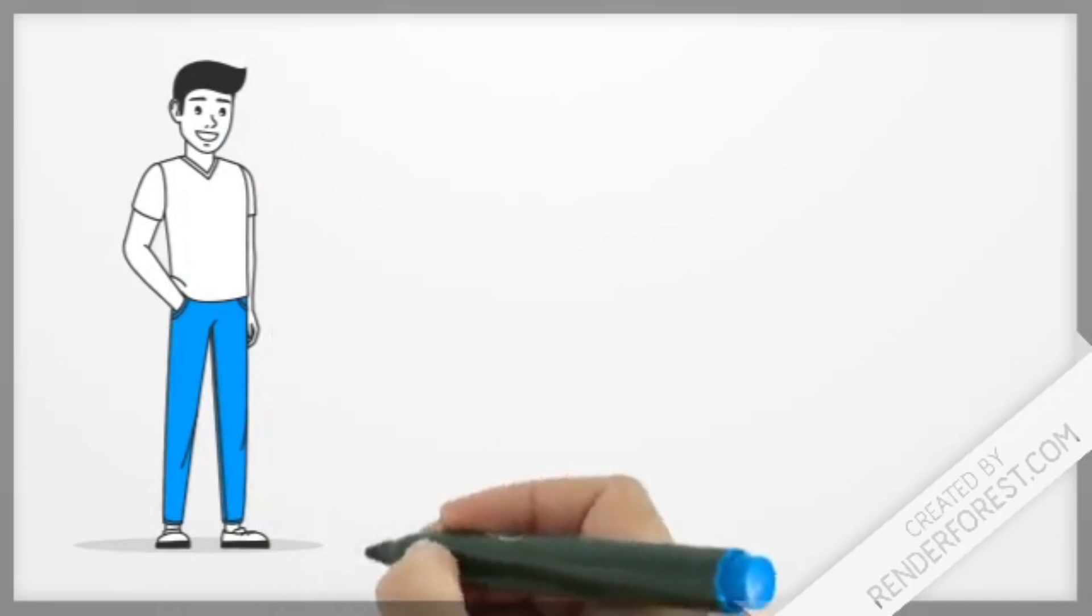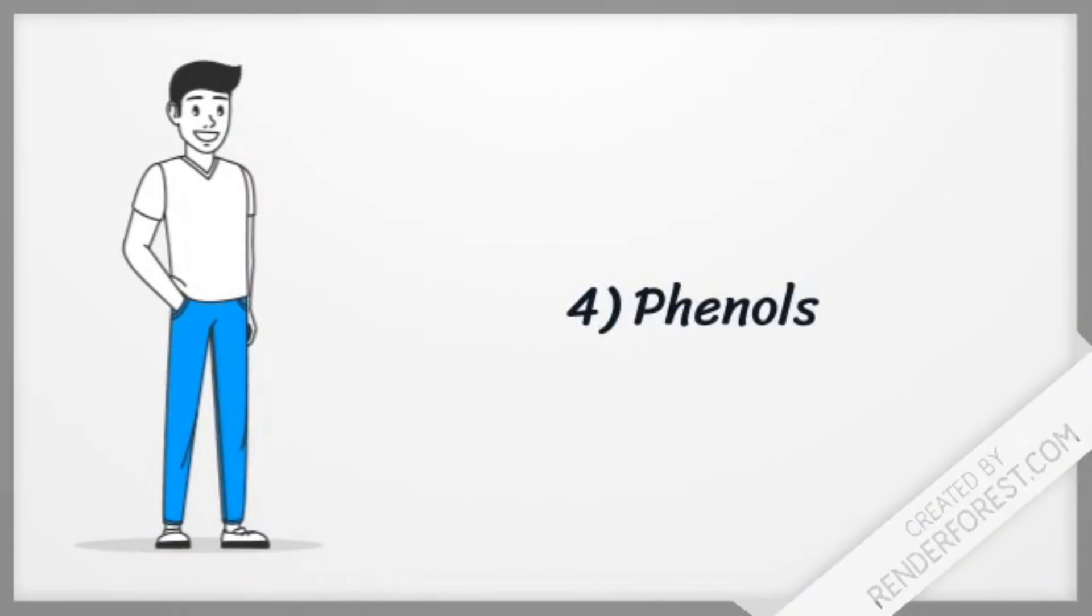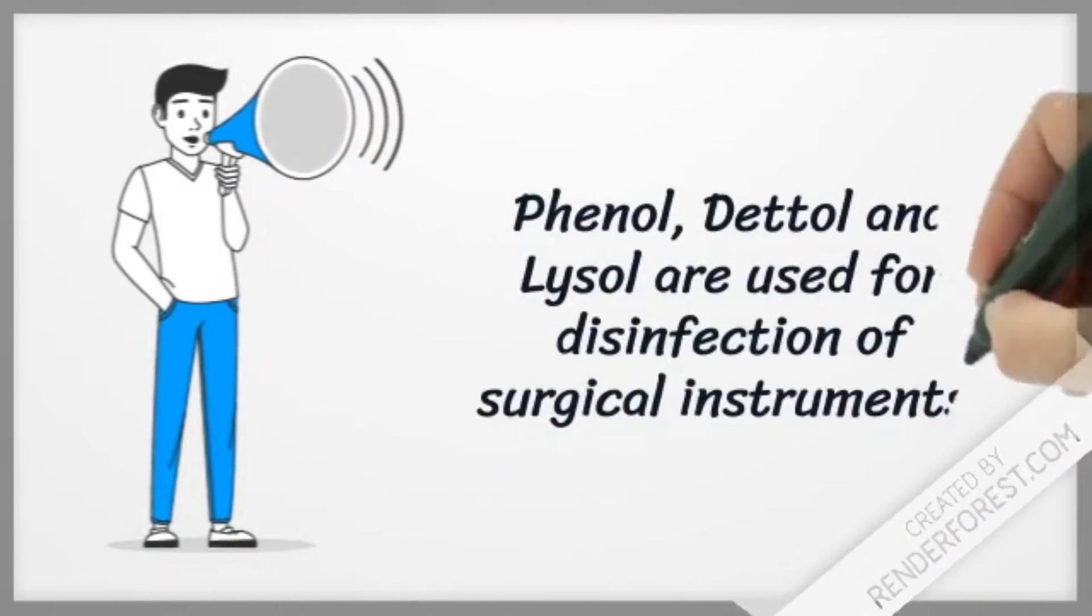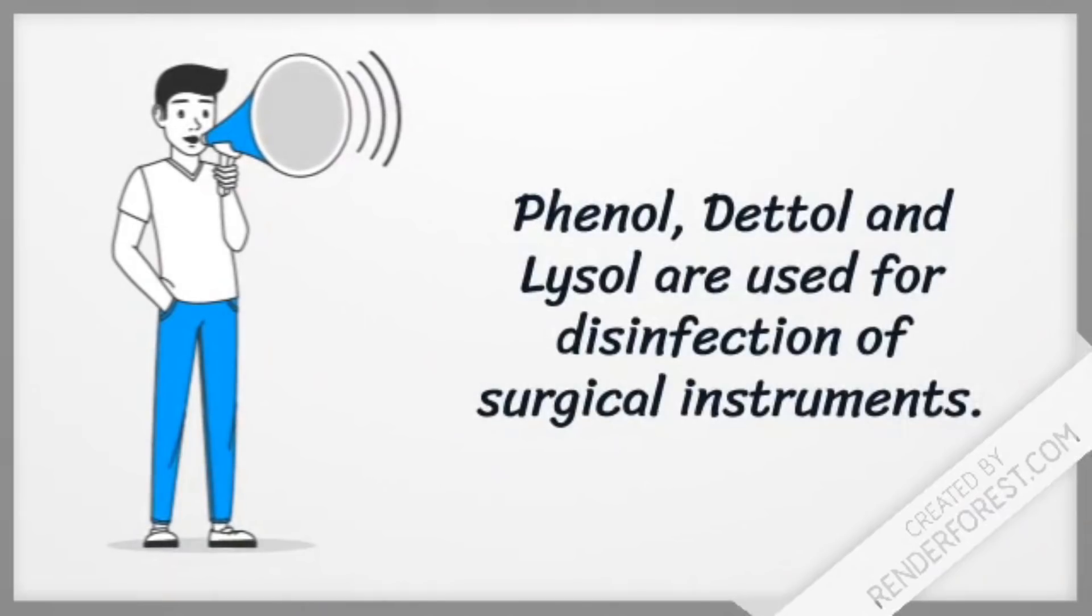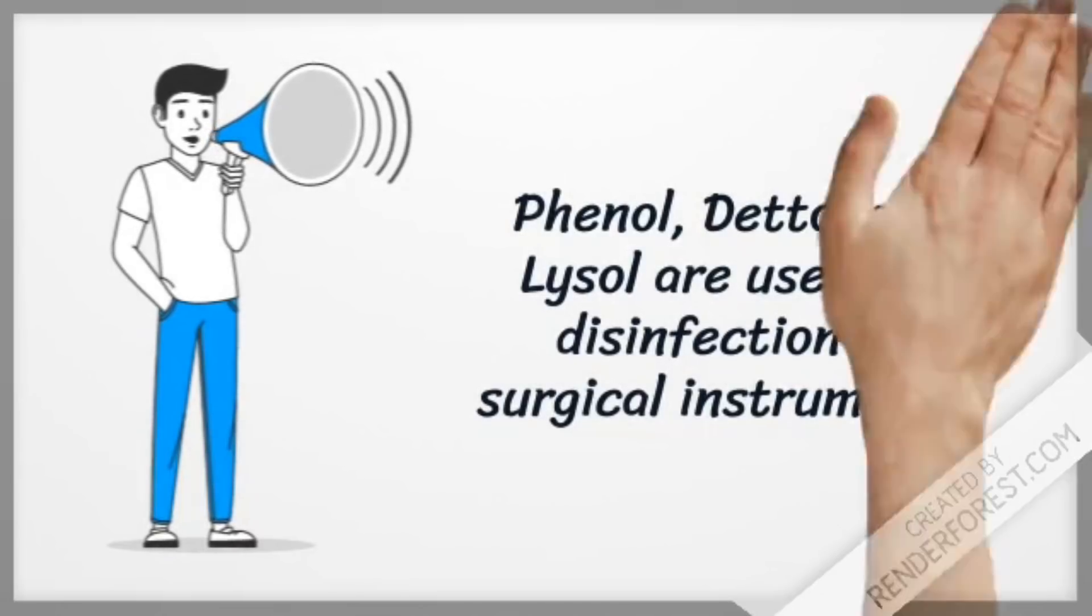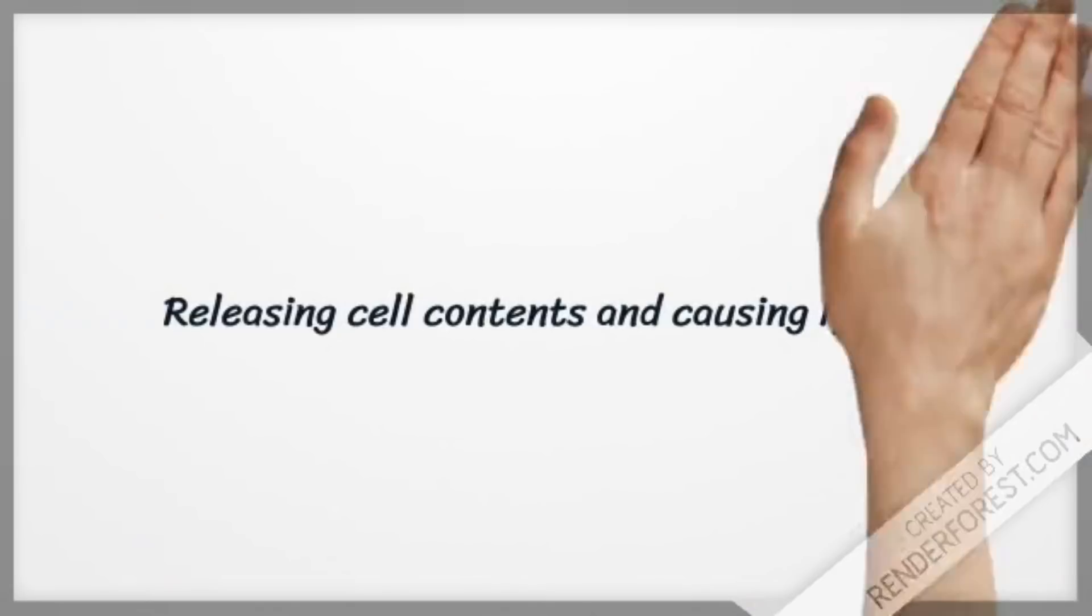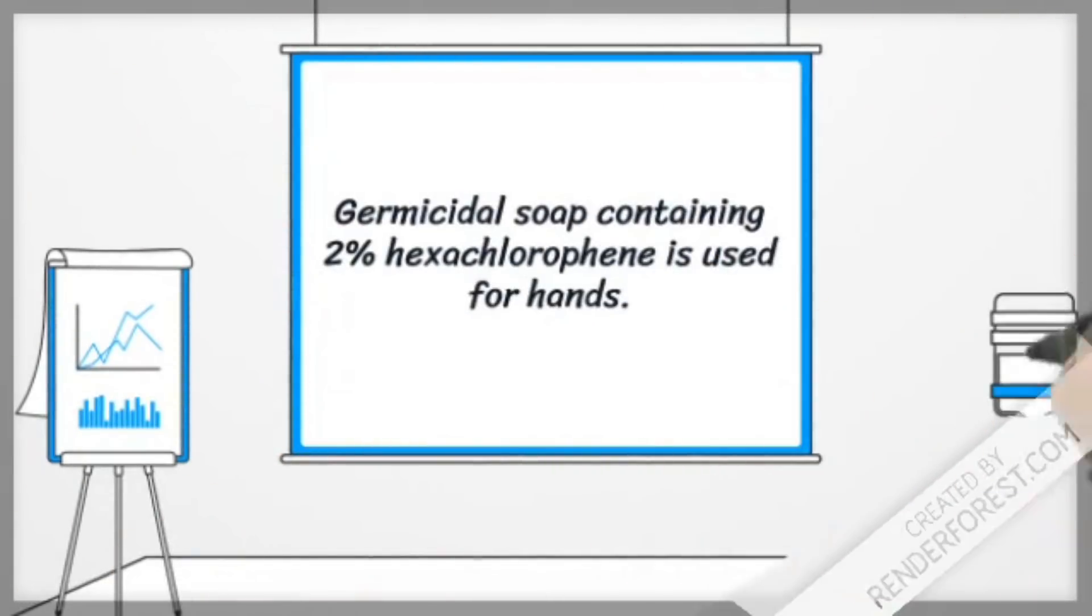Phenols. There are other substances similar to phenol which are Dettol and Lysol. It is used as disinfectant for surgical instruments. The effectiveness of phenol lies in destroying the cell membrane. The cell membrane is lysed and the contents of the cell are scattered.